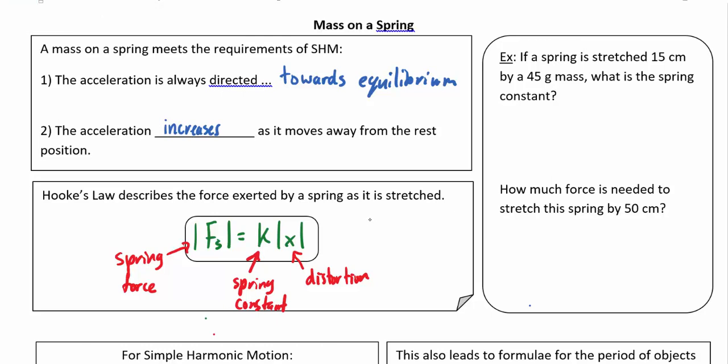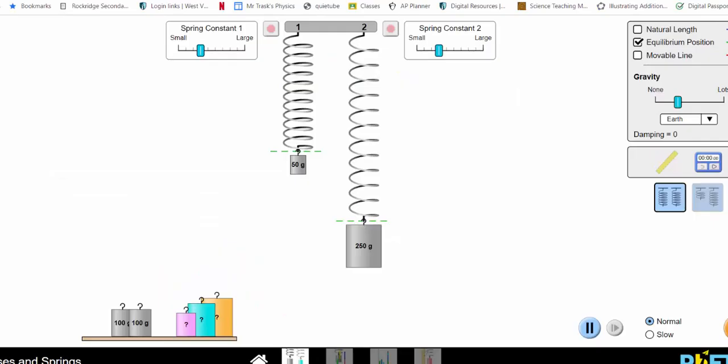You might also see Hooke's law written as Fs equals negative k delta x, where delta x is our change in distortion. The negative sign refers to the direction of the force — when you stretch a spring the force works in opposition and tries to pull back, and if you compress a spring it pushes against you.